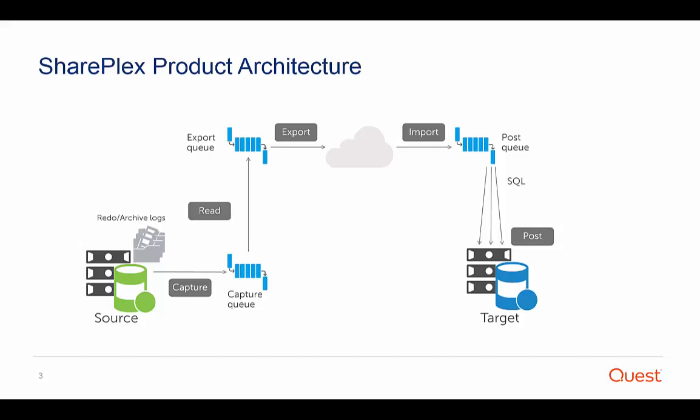The export process transports the replicated data across the network to the target system. On the target system, the import process receives the data and sends it to the post queue. The post process reads the post queue, constructs SQL statements for the operations, and applies them to the target objects within the Oracle instance on target.